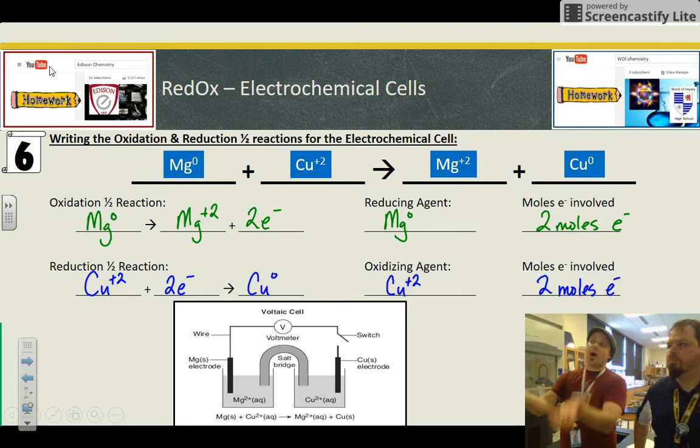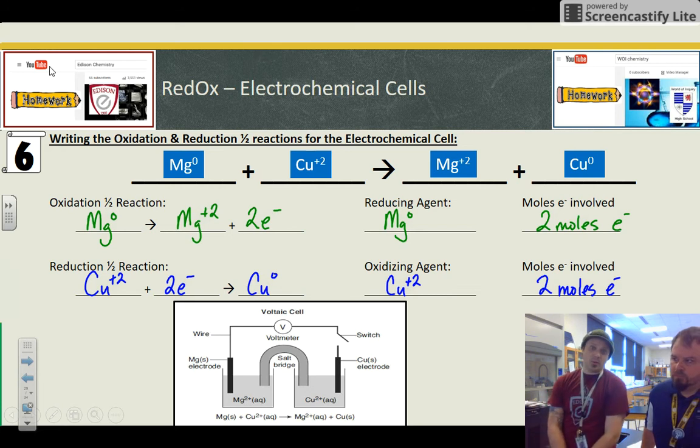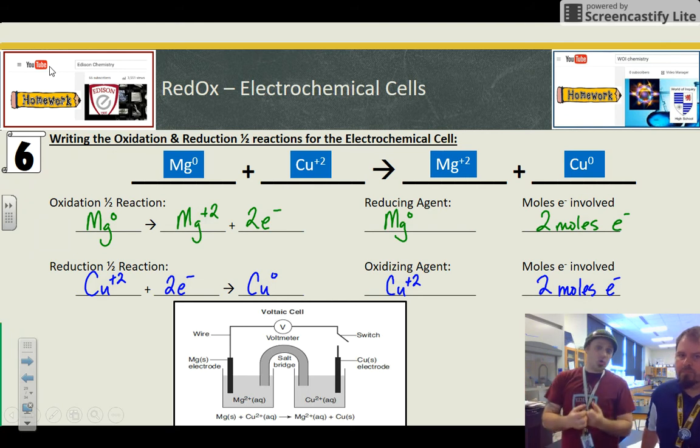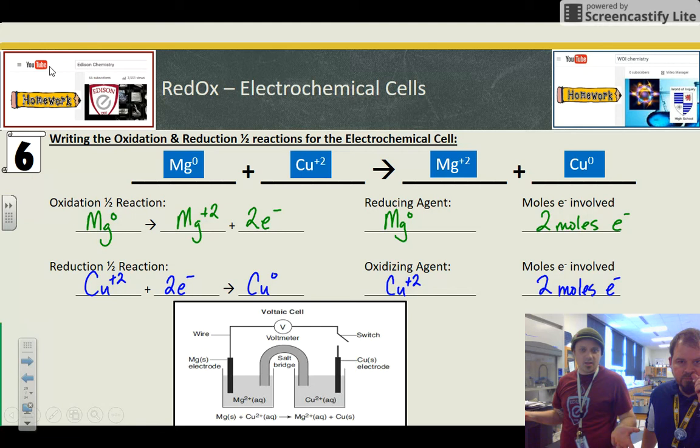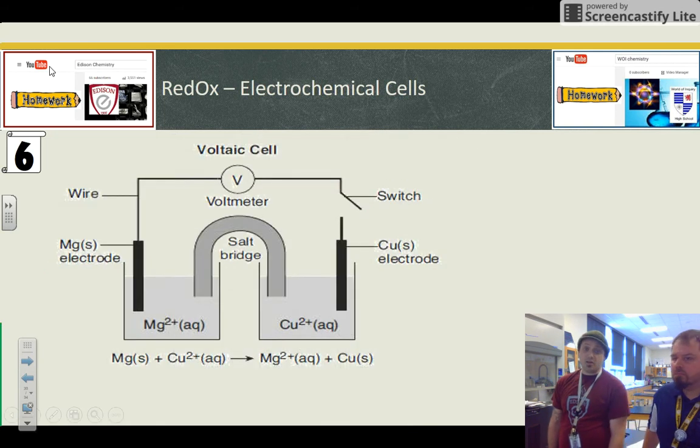And so when you combine these two oxidation and reduction half reactions, you get the reaction that we started with, which is written for us underneath the electrochemical cell. And the reason why the electrons aren't there is because they're the same on the product and the reactant side. So they technically cancel out. It's the same exact two moles of electrons that magnesium loses that the copper soaks up. So you don't really have to show them in the balanced equation because they kind of drop out. But when I see them in the half reaction, it helps me understand which one's oxidation and which one's reduction. So that's fabulous. We got half reactions and we just broke down our electrochemical cell thoroughly. All the pieces.